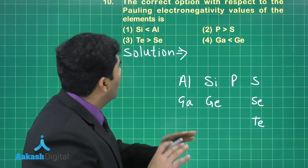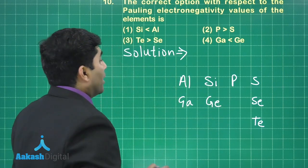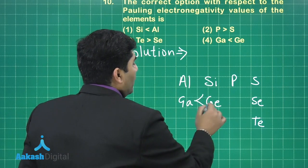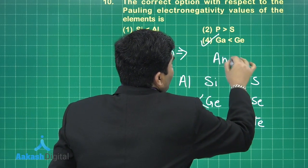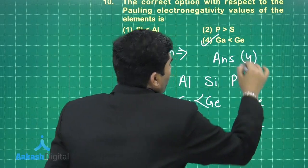Gallium greater than selenium - wrong. Gallium less than germanium - so this is the correct answer. So the final answer will be option number fourth, right?